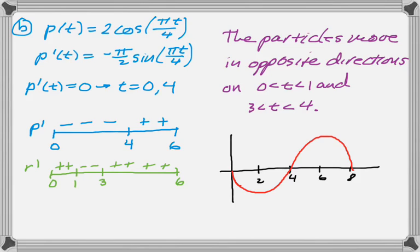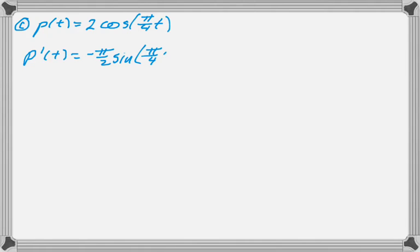Alright. Moving on to the next part. I need to find the acceleration of particle P at time t equals 3. So I'm going to need a second derivative. So P prime we found using the chain rule, and P double prime we're going to find using the chain rule also.